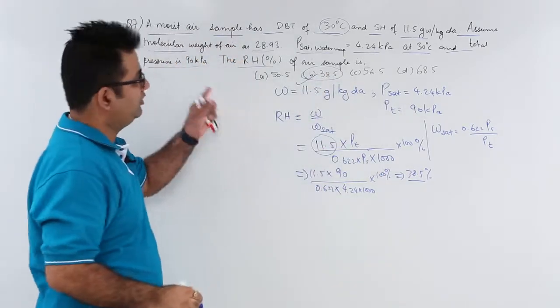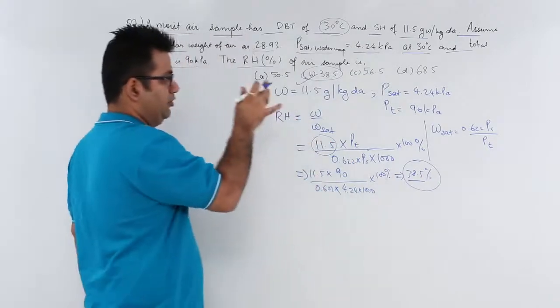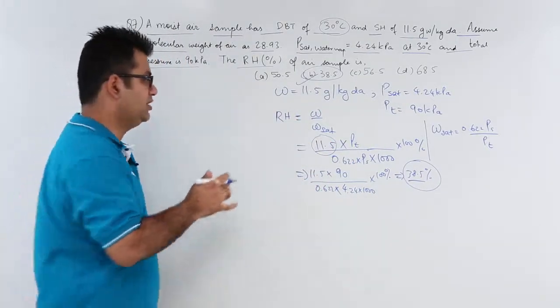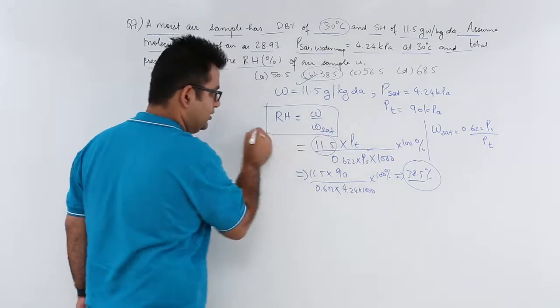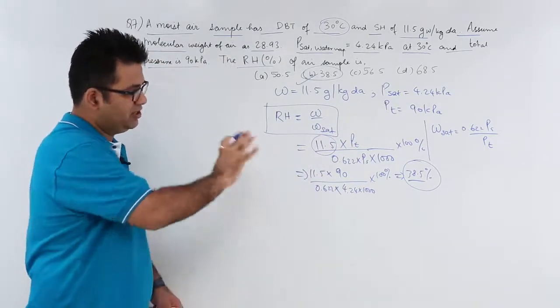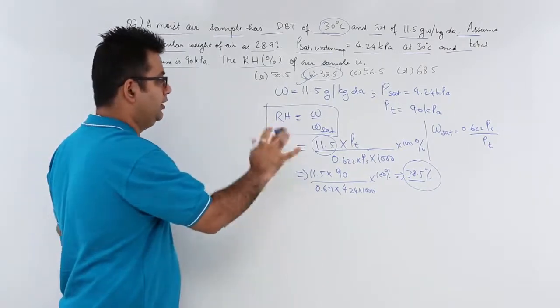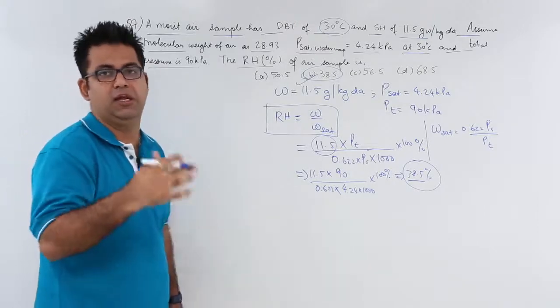So the RH of this air sample is 38.5%. So now you see that how easy this question is. It just makes use of this psychrometric relation for RH. You just have to recognize the parameters which are given to you and put it in the relevant formula and you will get the answer.